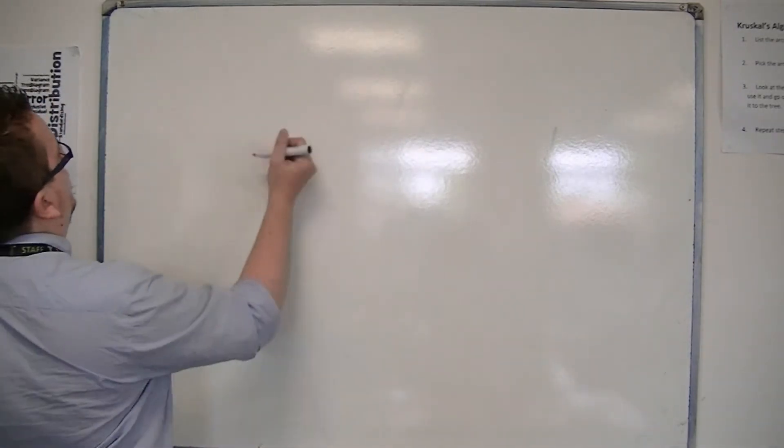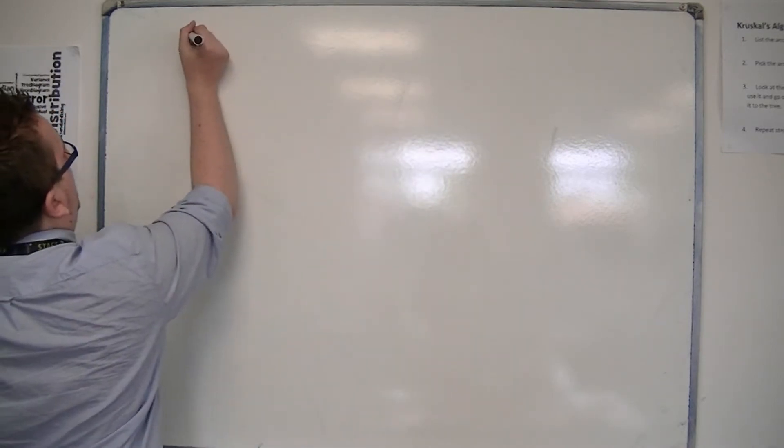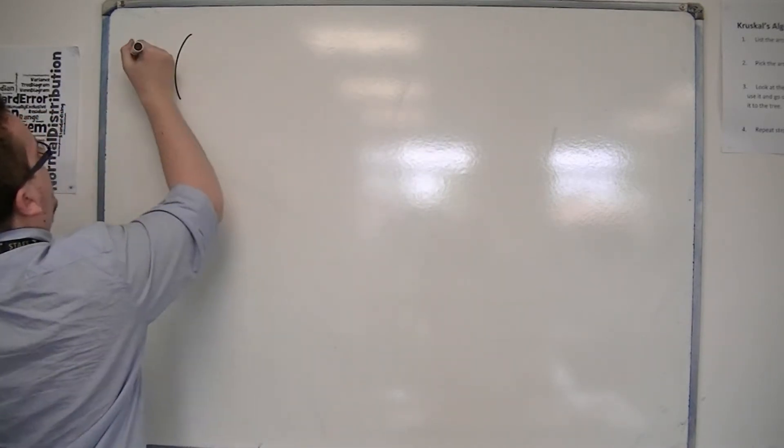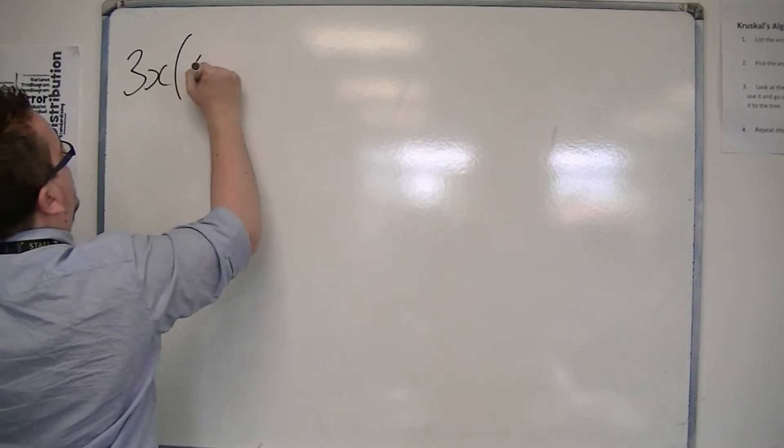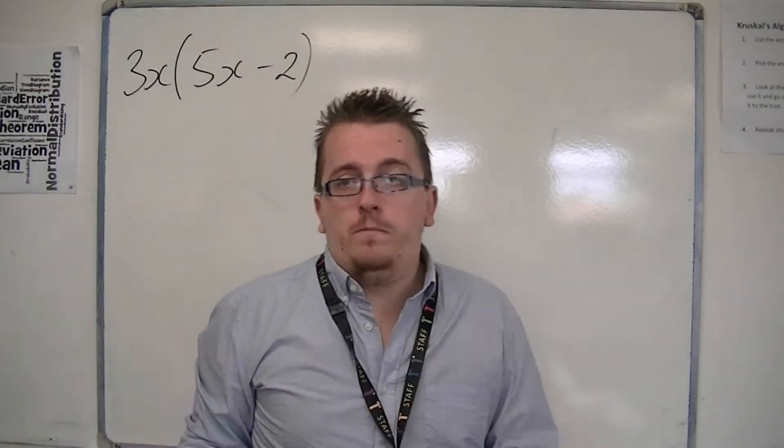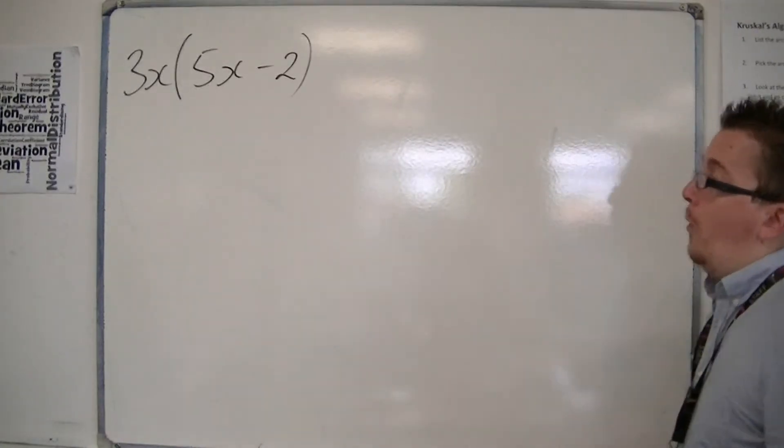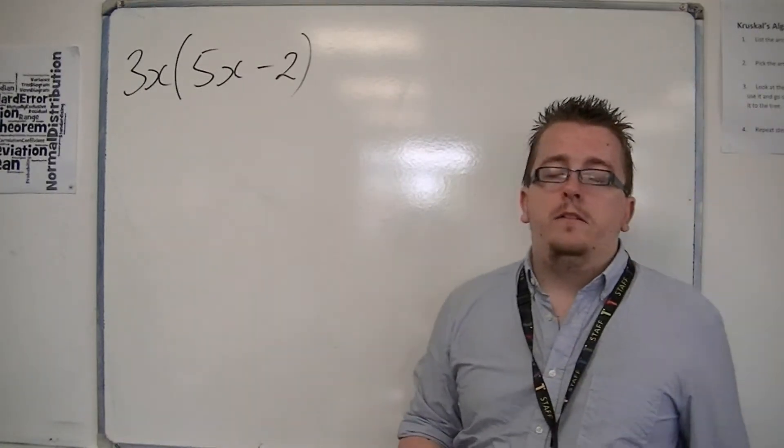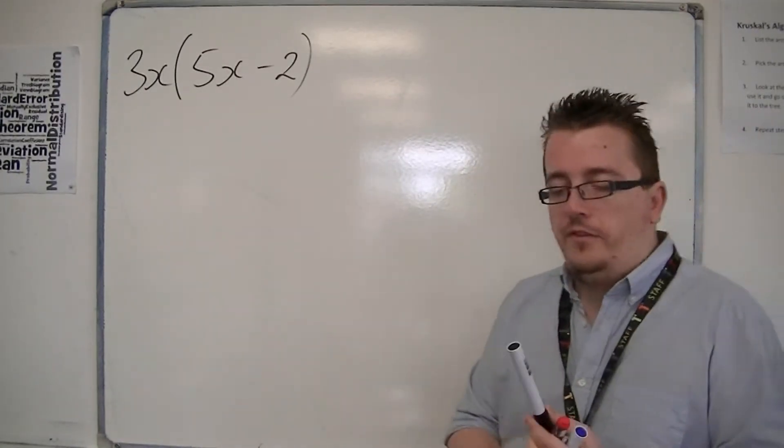So let's start off with something very simple, something like this first. Multiplying out one single bracket here. Nice and straightforward, nothing complicated.